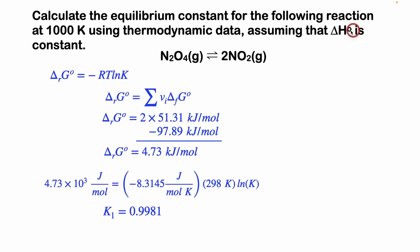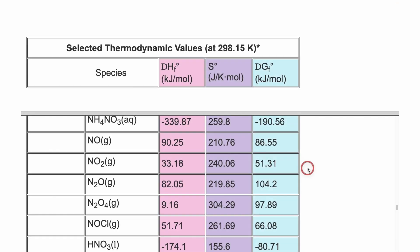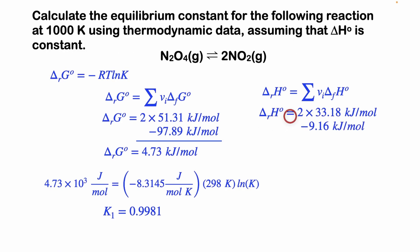Okay, let's solve for the change in enthalpy of the reaction. The standard enthalpy of reaction we'll get the same way. It's products minus reactants of the enthalpy of formation, and we'll use thermodynamic data as well. So here we are again. NO2 is our product, and it has an enthalpy of formation of 33.18. And our reactant, N2O4, has an enthalpy of formation of 9.16 kilojoules per mole.